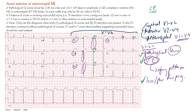To review pathological Q waves: we must see at least a width of 30 milliseconds — that's one small box wide. The depth should be at least one millimeter, one small box deep. The QS complex is simply a Q wave without an R wave — we call it a QS complex in the absence of an R wave.